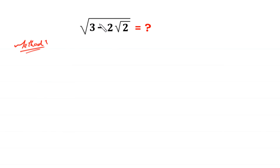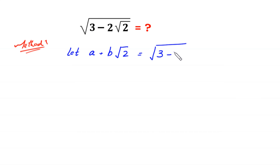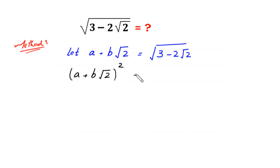In this method we suppose that let a plus b times square root of 2 is equal to square root of 3 minus 2 times square root of 2, and we take the square of both sides: (a plus b times square root of 2) squared is equal to (square root of 3 minus 2 times square root of 2) squared.